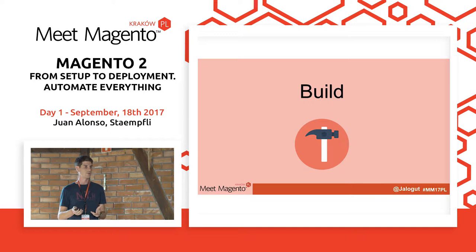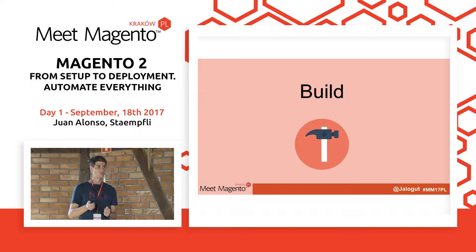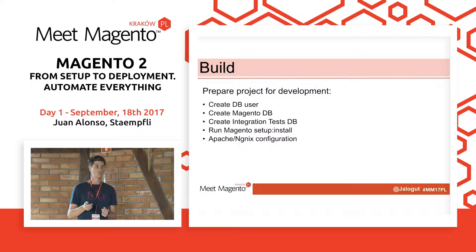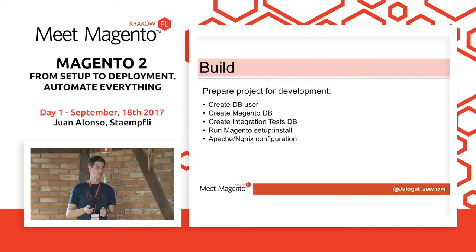Next step: build. Now we have our setup, we can install the files locally, but we still need to set up our environment. With Magento 2 you need to do some steps for that. When you have a new installation, you need to create your database and a database user. You also need to create an integration test database, because with Magento 2 you should be writing tests. You need to run Magento setup install, and then set up your Apache, Linux, and Nginx configuration.